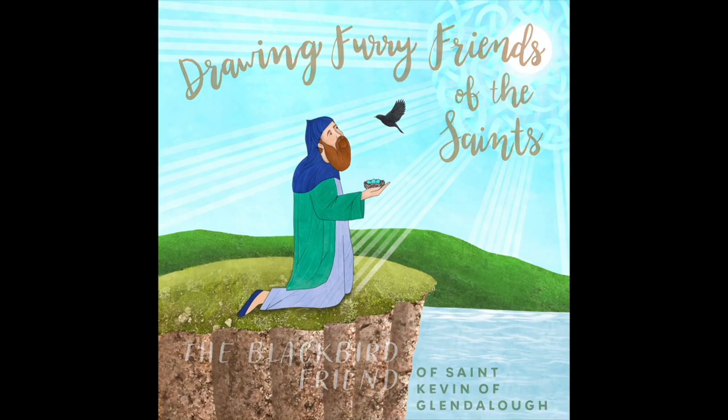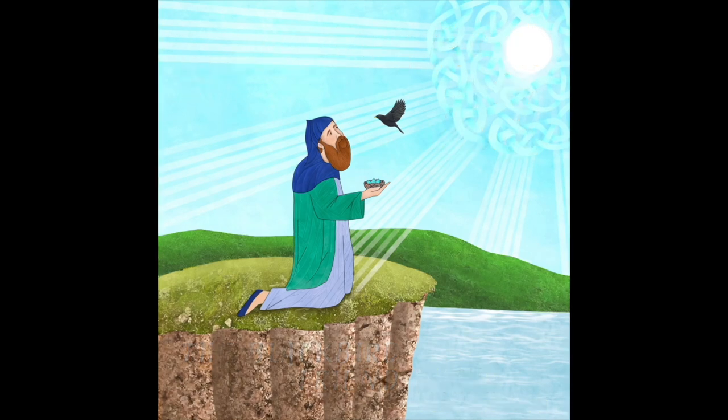St. Kevin was a monk who lived in a small hut near a monastery that he started in Ireland. He was very close with animals and plants and it was even said that sometimes branches and leaves of trees sang him songs.